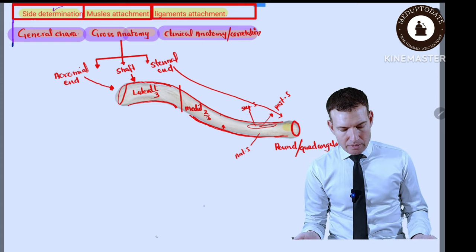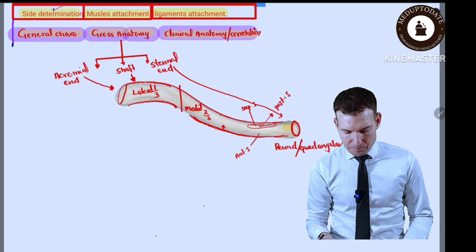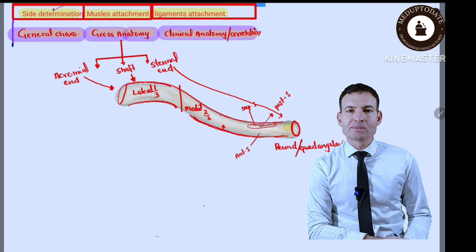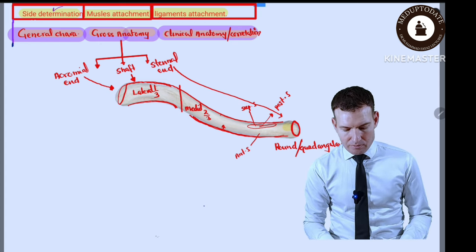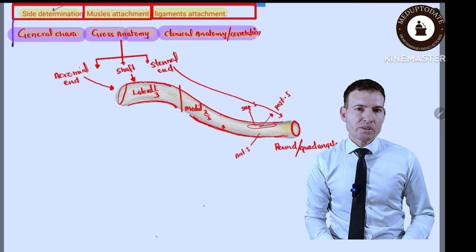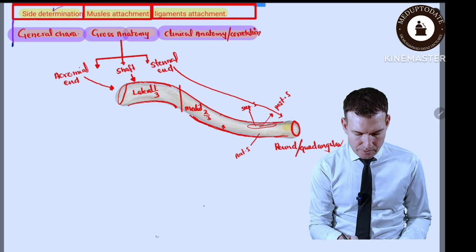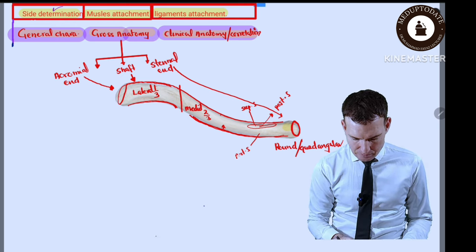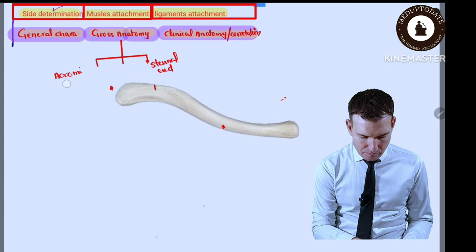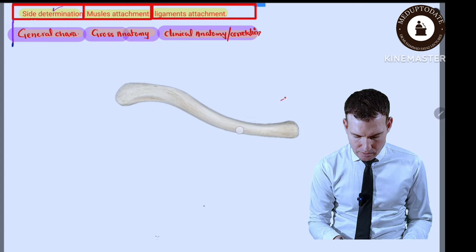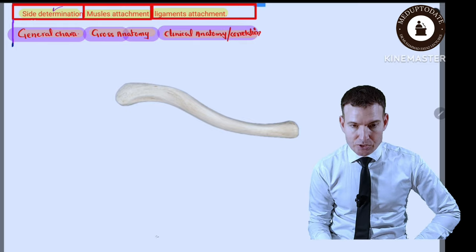It is very easy to determine which side is the medial two-thirds and which side is the lateral one-third based on the different borders and surfaces. In a viva exam you can easily recognize each part and identify its position. Now we'll discuss muscle attachments.